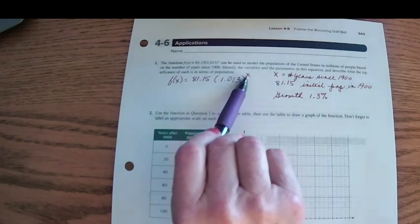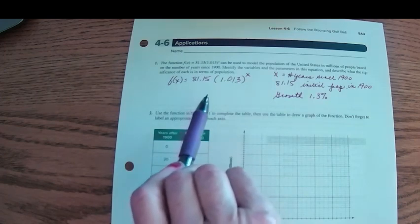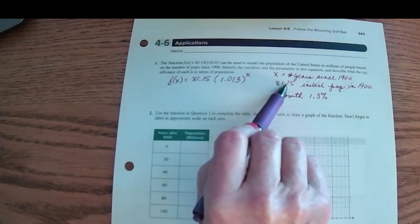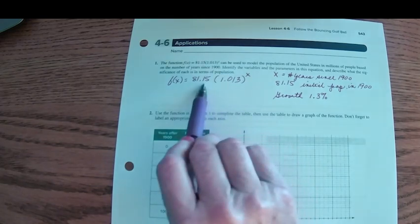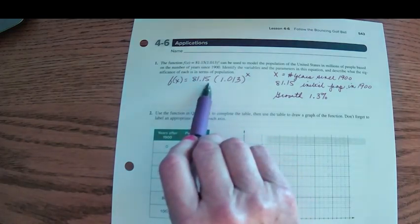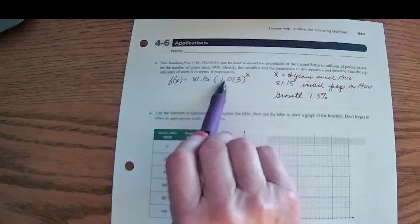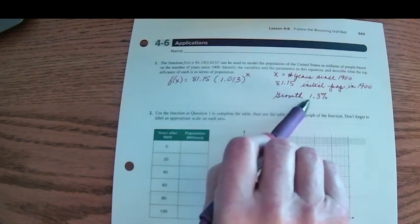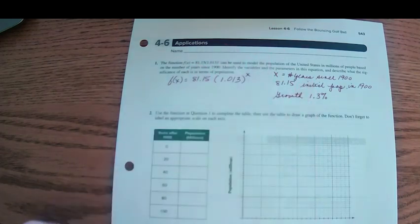First of all, raised to the x - x is going to be the number of years since 1900. My number out here, 81.15, this is my initial population. So in the year 1900, when x is 0, the population of the United States was 81.15 million people. And then it grew from there. And what was the growth percentage? This would represent a growth rate of 1.3% annually.